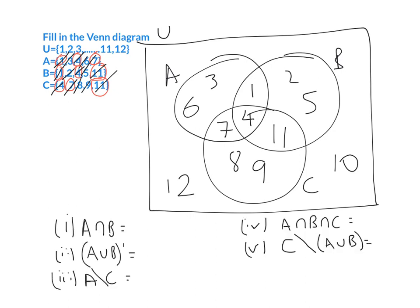Now we're going to answer a few questions based on this Venn diagram. The first one is A intersection B — you need to be very careful: the intersection between A and B is everything in the middle. The big mistake is students only write down the one, but it's also the four. So we've got one and four in the intersection. Number two is A union B complement. A union B is everything in A and B, and the complement of that is everything outside those two circles — so we've got eight, nine, ten, and twelve.